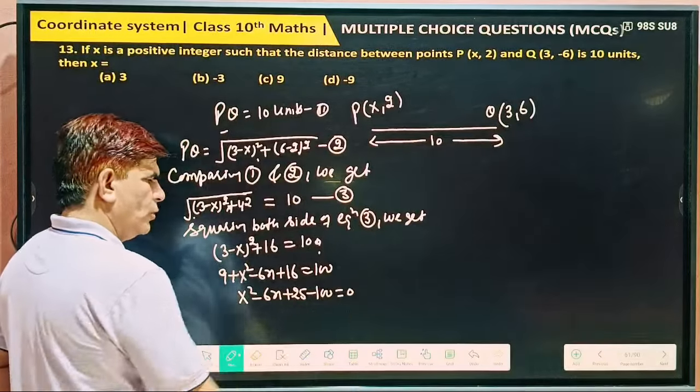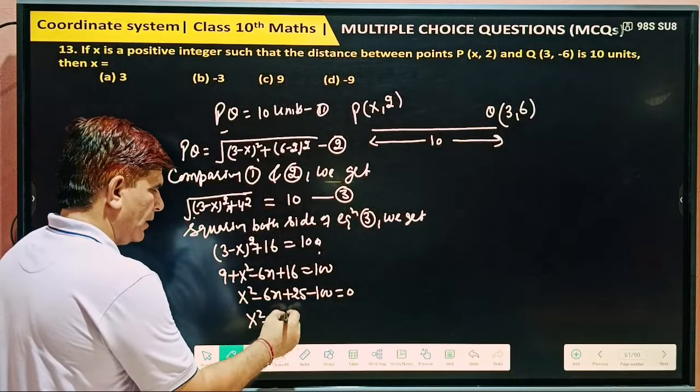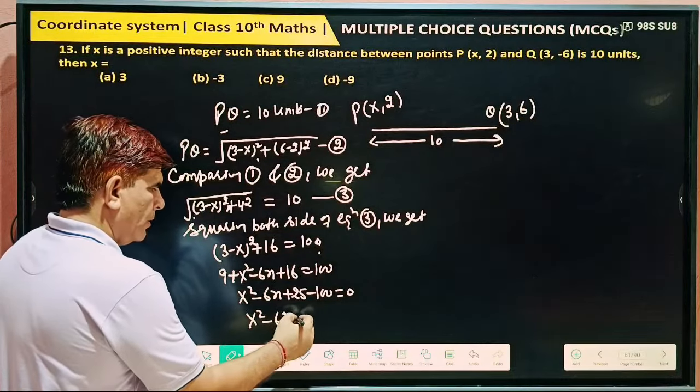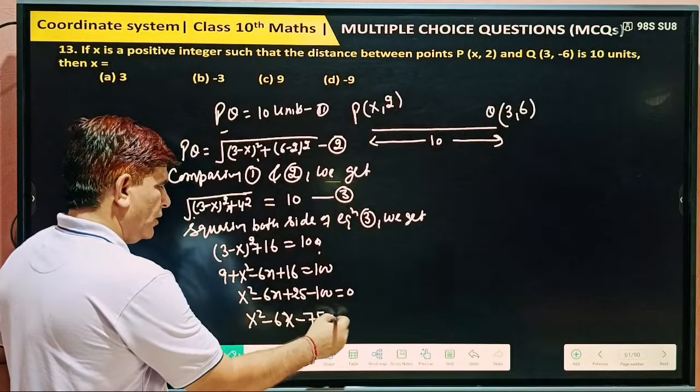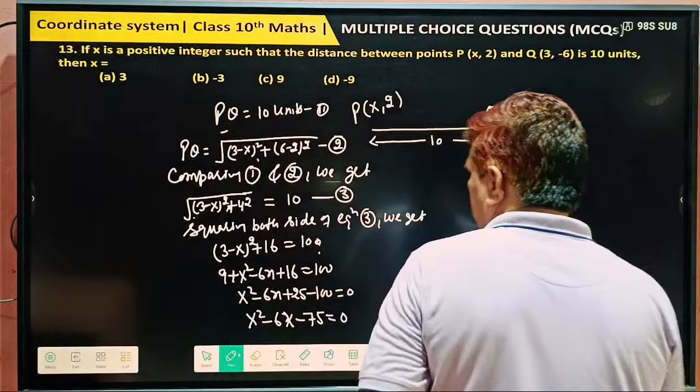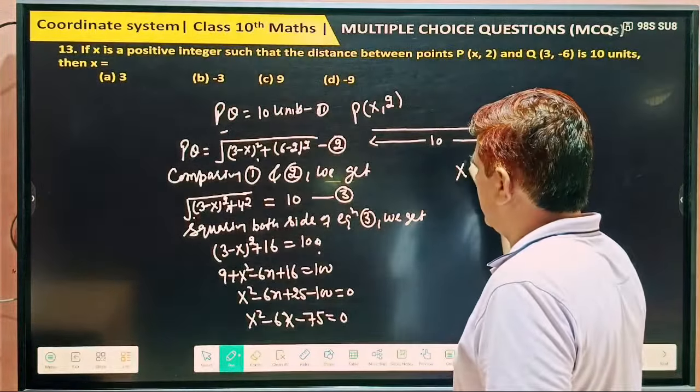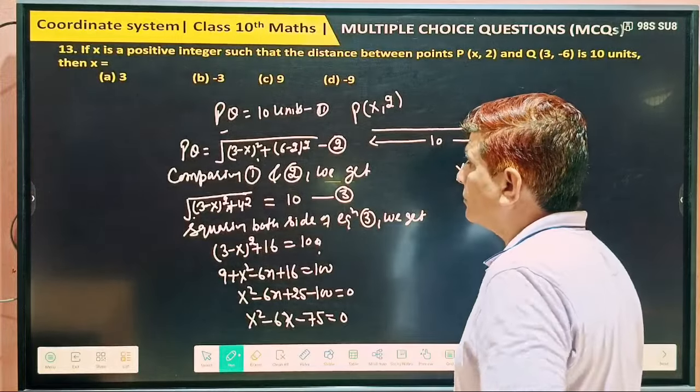16 plus 9 is 25. So we can write x square minus 6x plus 25 minus 100 equal to 0. If you solve this, x square minus 6x minus 75 is equal to 0.